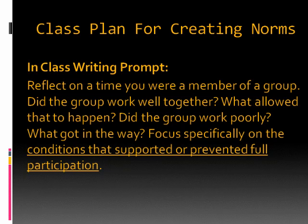To create group norms, one of the first things students do is a quick write — an in-class writing prompt where they answer: reflect on a time you were a member of a group. Did the group work well together? What allowed that to happen? Did the group work poorly? What got in the way? Focus specifically on conditions that supported or prevented full participation. I ask them to think about sports teams, work environments, classroom spaces — to grab something specific and think about whether it worked and why. One thing that comes up is that a group isn't productive if people don't show up, or don't do the reading.